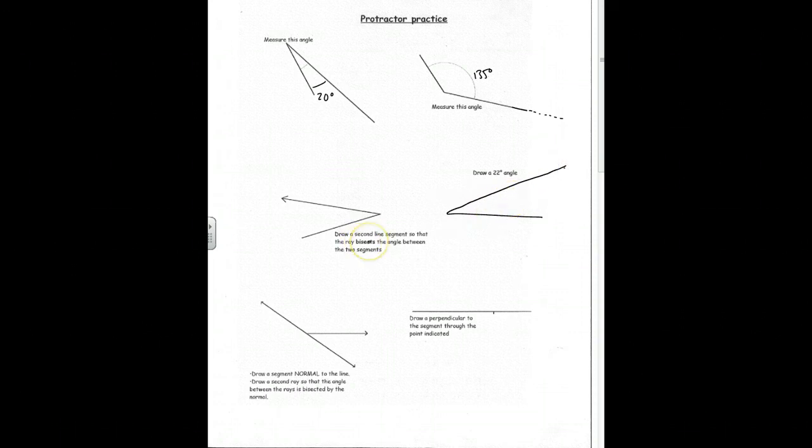Here I want to draw a second line segment so that the ray bisects the angle between the two segments. So I need a second one over here so that these two angles are equal, which means I first need to measure this one. It looks like these are a little bit short.